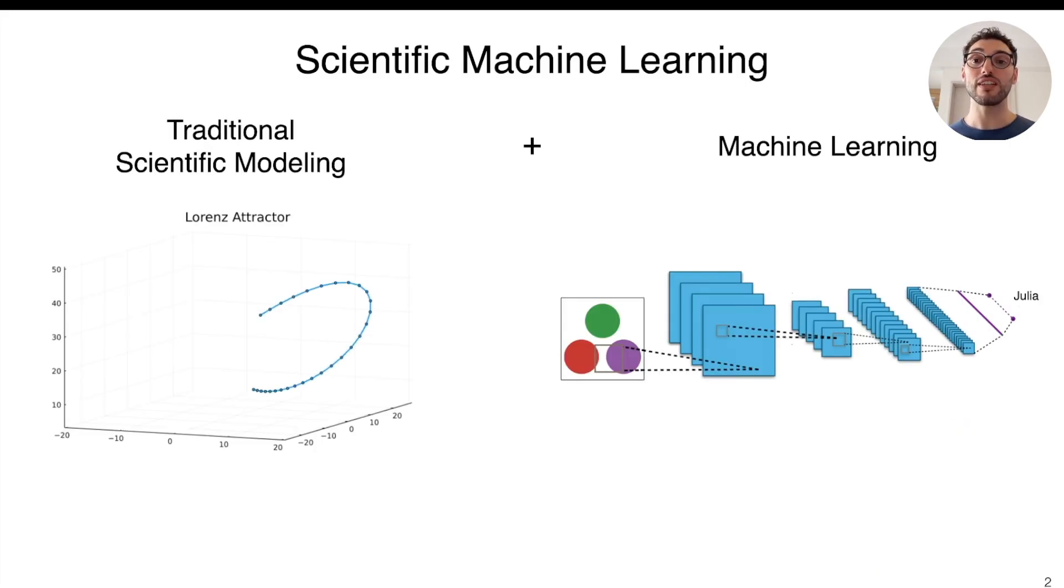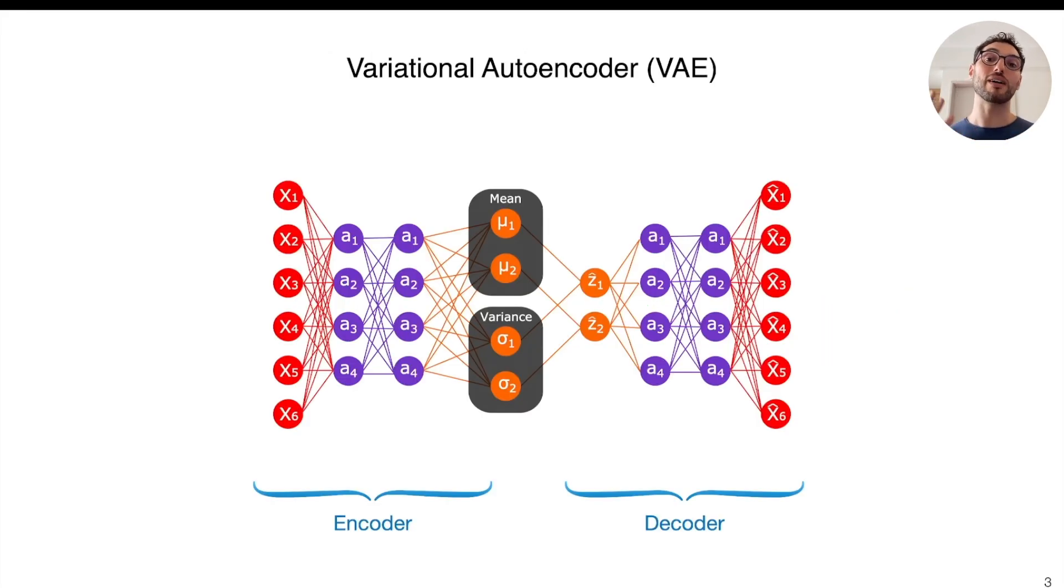This work is about how to incorporate prior knowledge of your system in the forms of differential equations into general machine learning models. In particular, we have been working with latent differential equation models, which you can think of as some kind of variational autoencoder with differential equations inside ruling the latent space dynamics.